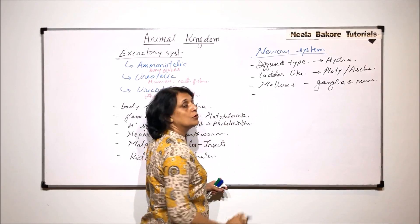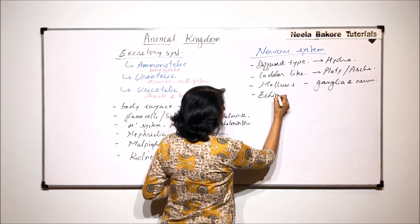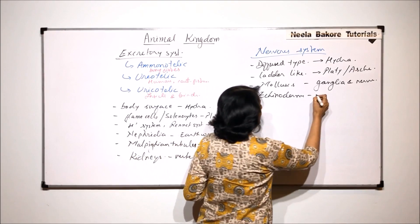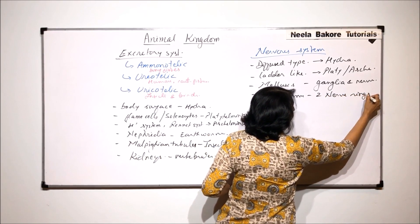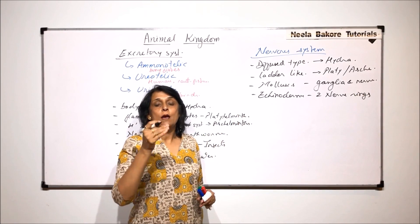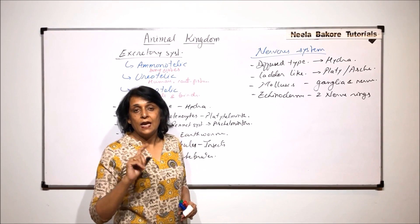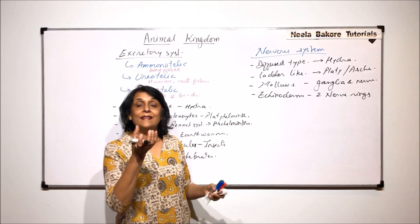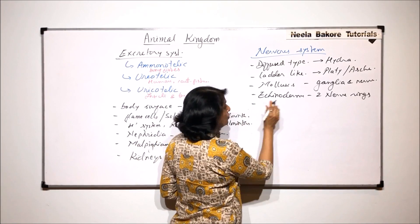Moving to more evolved types, in echinoderms there are two nerve rings present on the upper and lower surfaces, known as the aboral and oral surfaces. These nerve rings are in the form of a circular structure. Echinoderms also have a water vascular system along with this nervous system of two nerve rings.